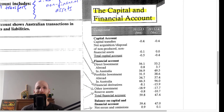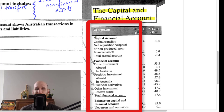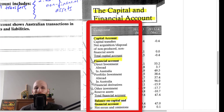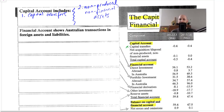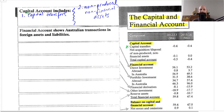Looking at the capital and financial account structure, we can see it is broken up into the capital account and the financial account, and then we get the balance on the capital and financial account. Breaking it down further, the capital account consists of capital transfers and non-produced non-financial assets.